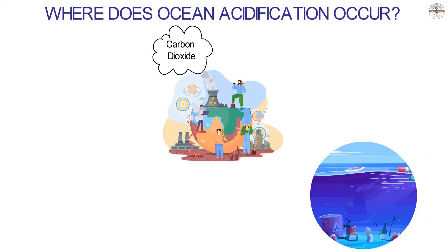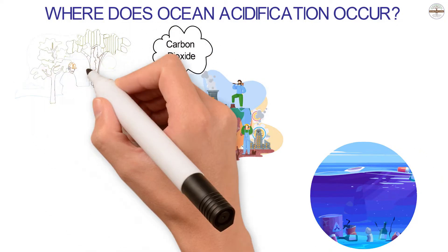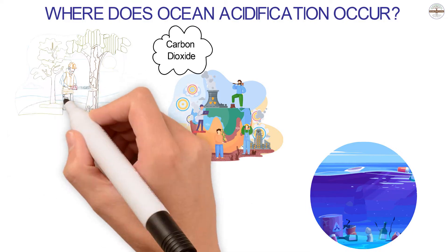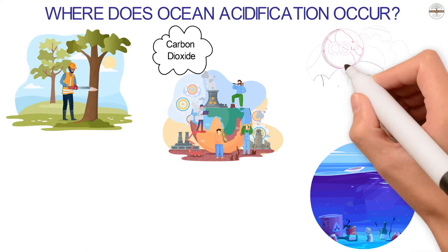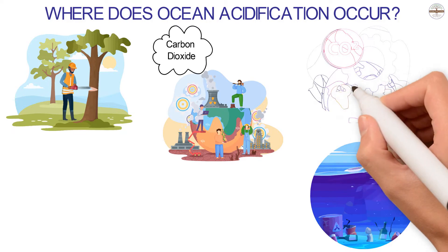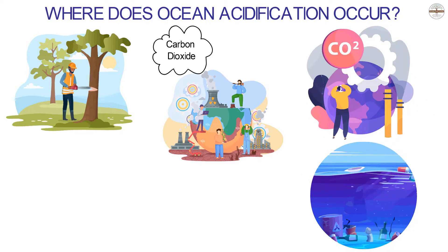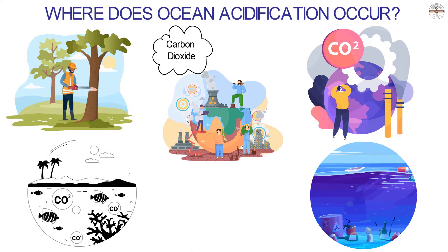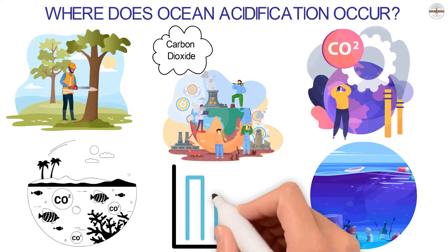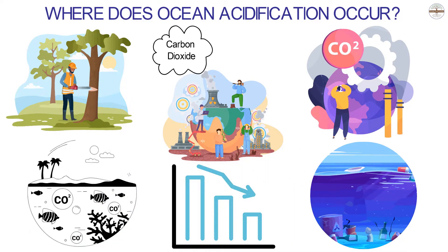However, some areas are more affected than others. CO2 levels are higher in countries that use fossil fuels or cut down trees. The oceans in these places tend to be more acidic because they get more carbon dioxide from the air. As the climate changes, ocean acidification is one of the things that will happen, and it can only be reduced by cutting back on the amount of CO2 in the air.